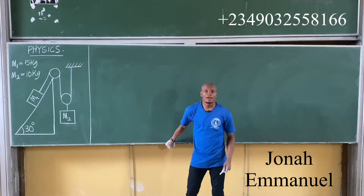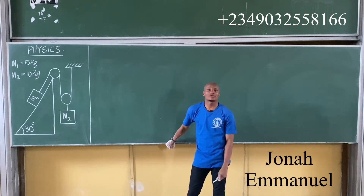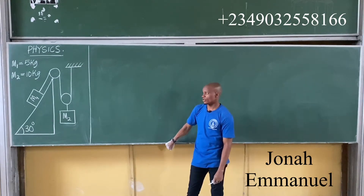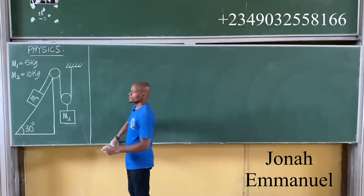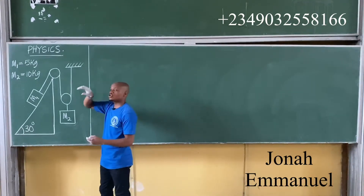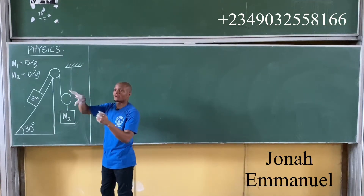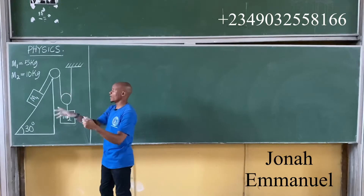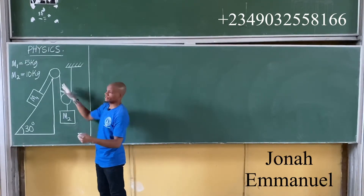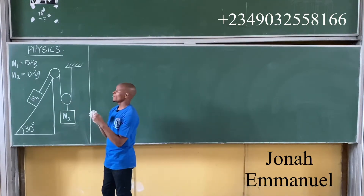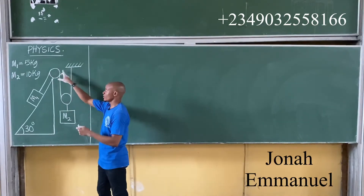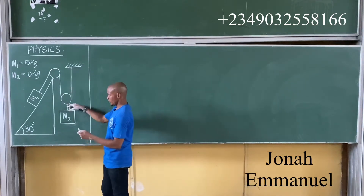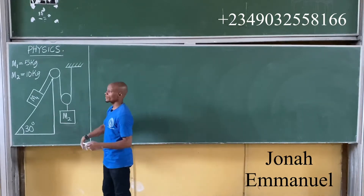Alright, so next up, let's try to find the acceleration and tension for this system. Usually the strings revolve around the pulleys. So there are four possible directions here — either this way, this way, this way, or this way. For this case, what would it be?